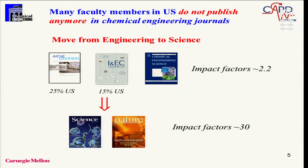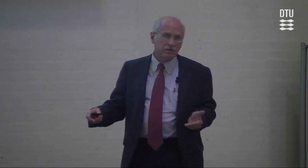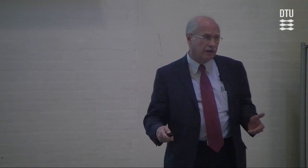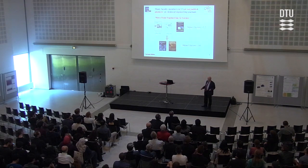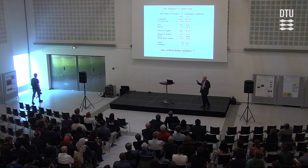Traditional journals like AIChE Journal, IECR, and Chemical Engineering Science now see relatively small percentages of papers from the U.S. — around 15%, though AIChE has recently increased to close to 25%. For many new faculty, the aspiration is to publish in journals like Science and Nature because the impact factor is much greater. The problem is when we stop publishing in mainstream chemical engineering journals, we have to ask whether this is sustainable for the future of the profession.